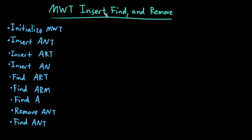How do we actually insert, find, or remove elements in a multi-way trie? It turns out that these three algorithms are actually pretty trivial, so instead of having a separate video for each of these, I'm just going to teach it to you all at once using this example. They're pretty much all the same algorithm, just slightly varied.